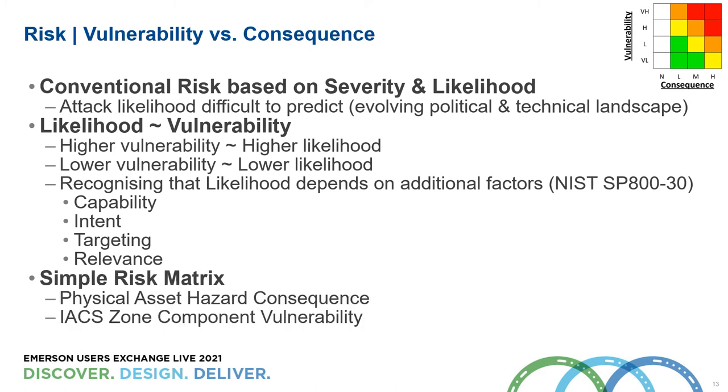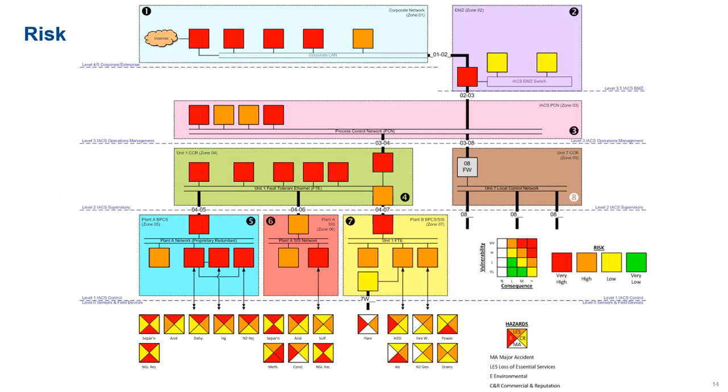We could take a real simple approach, taking the hazard consequence and the digital or logical vulnerability to give us this simple risk matrix. We've got our hazards down the bottom. We are combining the vulnerability from the CAF with these hazards to give us a risk. We can now see where our digital assets are more risky, and that gives us a simple prioritization. You want to focus on the IACS assets that are most important to you. You can't tackle everything at once, so you want to prioritize your efforts, go for the quick wins, go for the weakest areas.